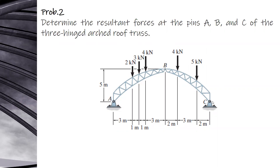Same as with the example problem, first you need to solve for the reactions at A and C, and then next you cut a section at B.